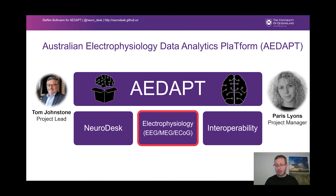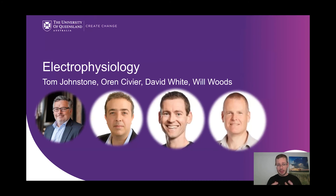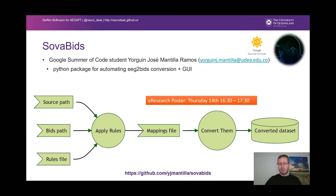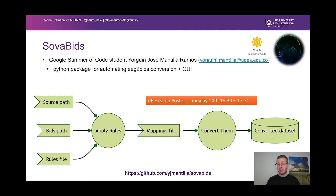Let's look at the second component of this project: electrophysiology. This is led by the team in Swinburne. What they're working on is a tool called SovaBits — a graphical user interface that enables researchers to convert their data from EEG raw datasets to the brain imaging data structure. If you're interested to know more, visit the poster this afternoon from Jorgen. This was a Google Summer of Code project and they did amazing work.